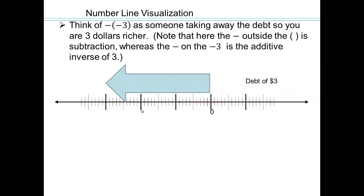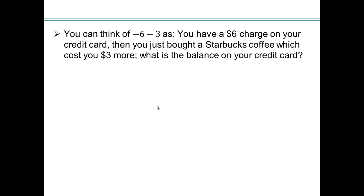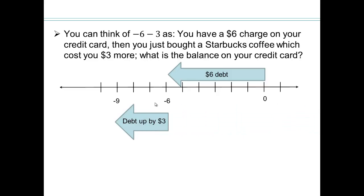So here we have a debt of 3. Somebody took it away, which made you $3 richer. All right, let's think of negative 6 minus 3. Suppose you already had $6 charge on your credit card, and now you just bought a coffee for $3. What is the balance on your credit card? So we have a $6 debt and then additional $3 debt. So now we are $9 in debt. So you can think of subtraction of 3 as going in the opposite direction of 3, because 3 is that way. So subtracting a 3 means going in the opposite direction.